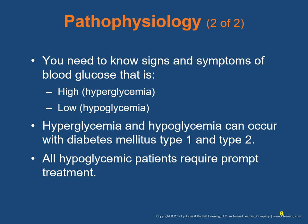Both hyperglycemia and hypoglycemia can occur with diabetes mellitus type 1 and type 2. You will encounter many patients displaying the signs and symptoms of high and low blood glucose levels. Hyperglycemia and hypoglycemia can be quite similar in their presentation — patients may have altered mental status that can mimic alcohol intoxication. Intoxicated patients often have abnormal glucose levels.